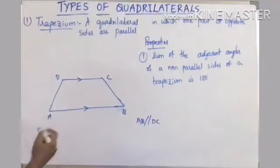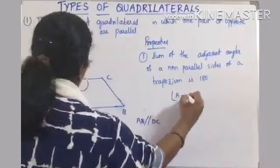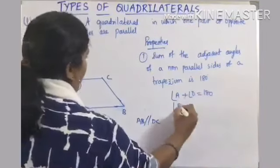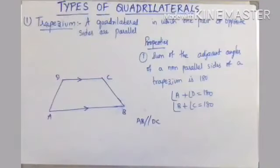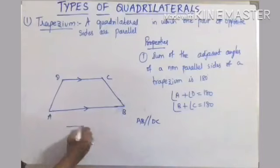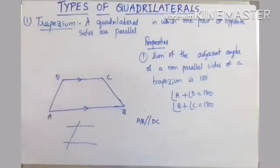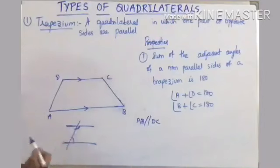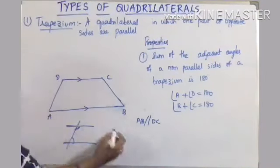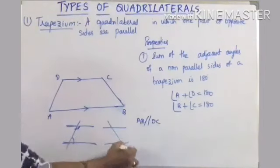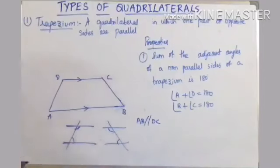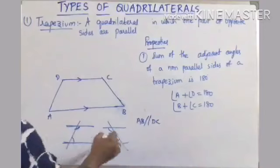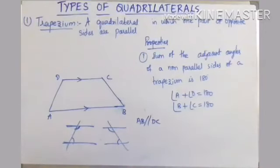The non-parallel sides act as a transversal. When two lines are parallel, the interior angles on the same side of a transversal are supplementary. This is why the sum of the adjacent angles of the non-parallel sides of a trapezium is 180 degrees.